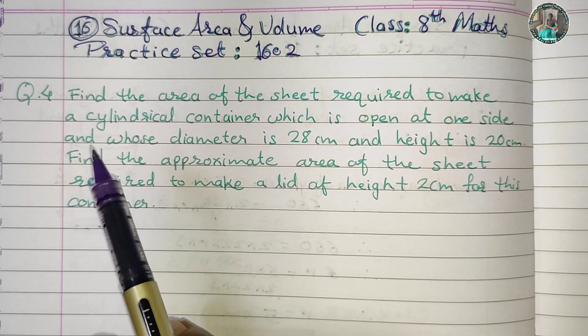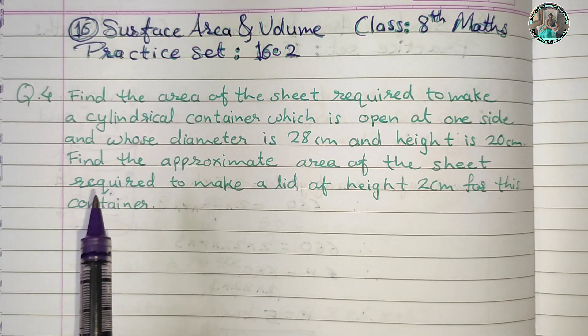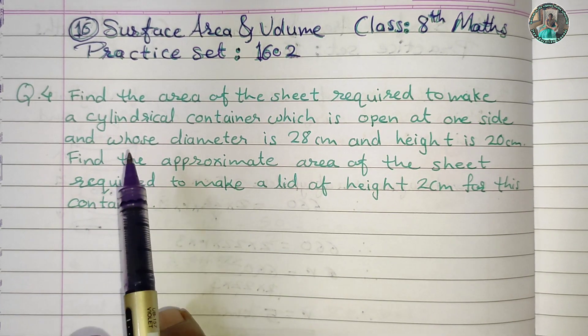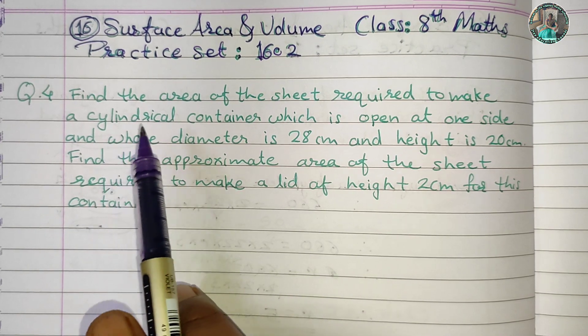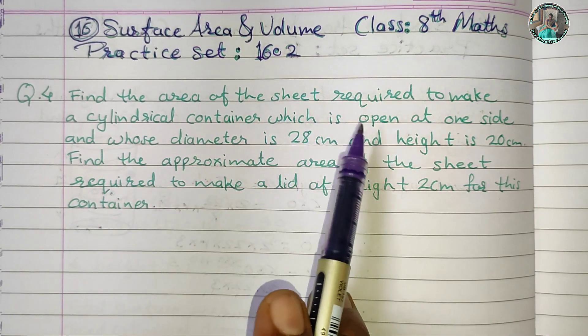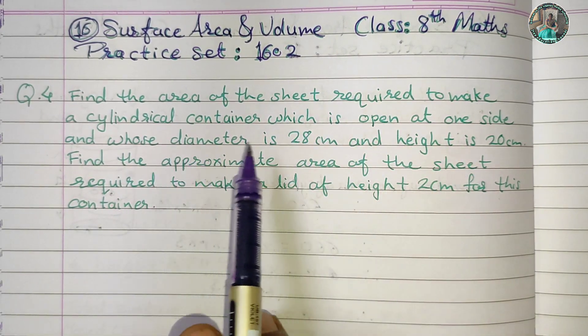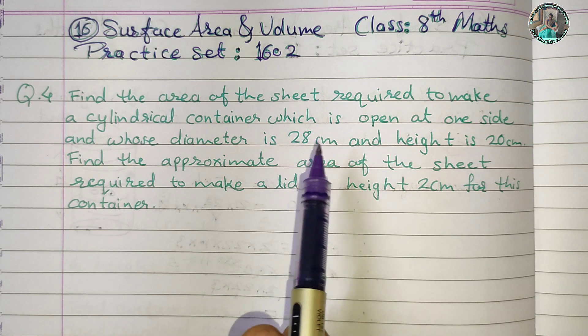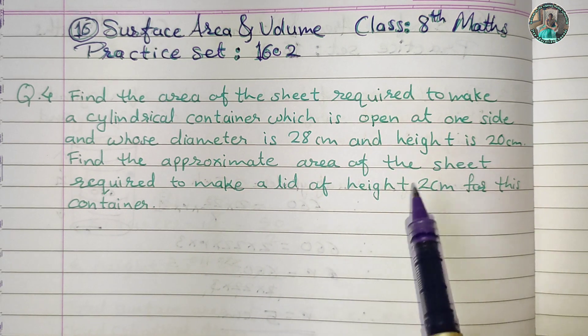Question 4 is a little different from the rest, but it is an easy question and the calculation is easy. Find the area of the sheet required to make a cylindrical container which is open at one side.